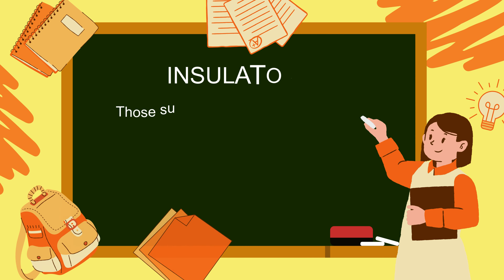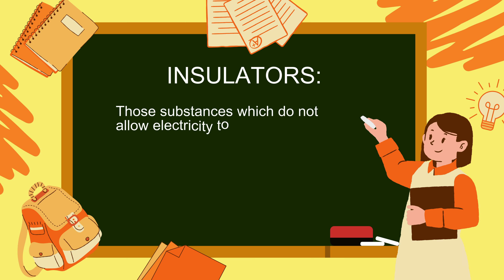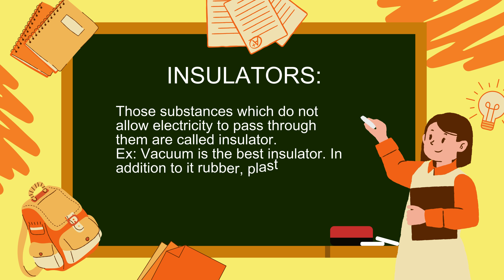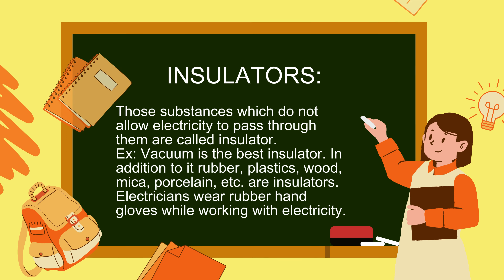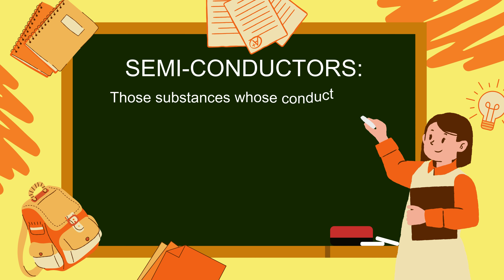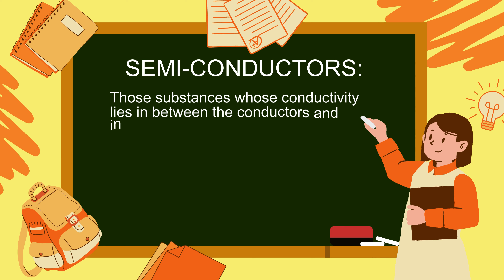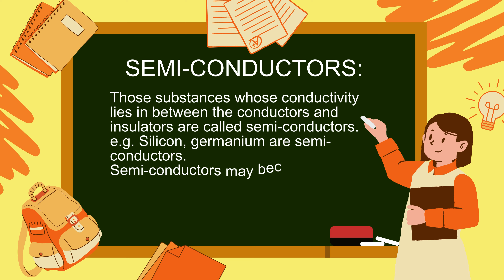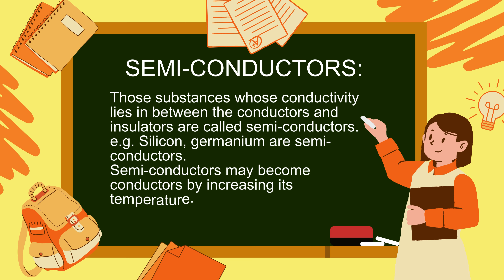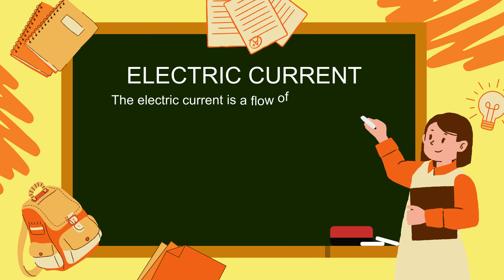Insulators: those substances which do not allow electricity to pass through them are called insulators. Vacuum is the best insulator; rubber, plastics, wood, mica, and porcelain are also insulators. Electricians wear rubber hand gloves while working with electricity. Semiconductors: those substances whose conductivity lies between conductors and insulators are called semiconductors — for example, silicon and germanium. Semiconductors may become conductors by increasing their temperature.